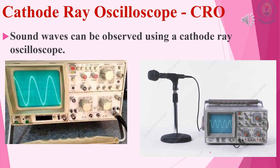The sound waves can be observed using a cathode ray oscilloscope. The cathode ray oscilloscope is normally connected to a microphone. When the sound waves reach the microphone, the sound energy will be converted to electrical energy. The electrical signals will be generated as the output, and these electrical signals will be channeled into the cathode ray oscilloscope, which will display the electrical signals received on the display screen in the form of waves.